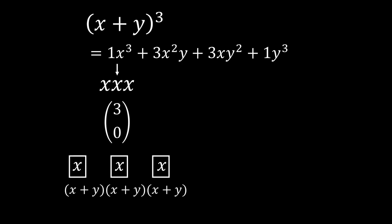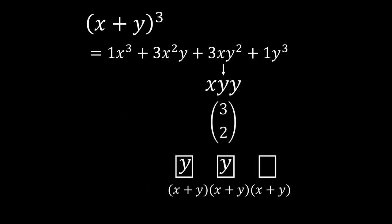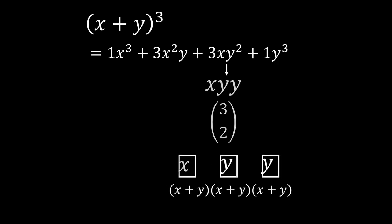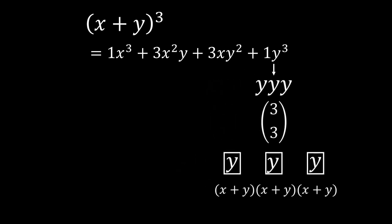So for x cubed, the coefficient would be the number of arrangements of three x's and zero y's. And because there are zero y's, we can find the number of arrangements by doing three choose zero. We can do a similar process for xy squared, where we do three choose two. And finally, we can do three choose three for y cubed.